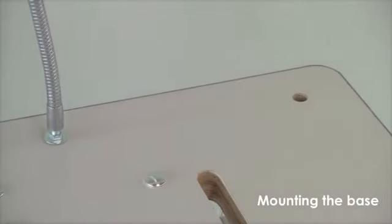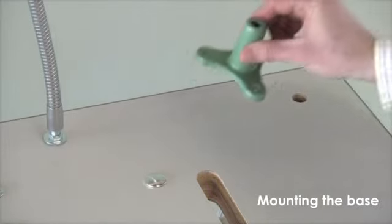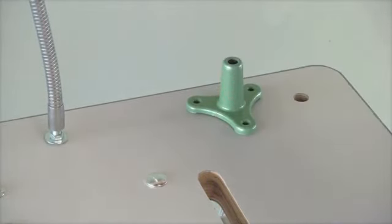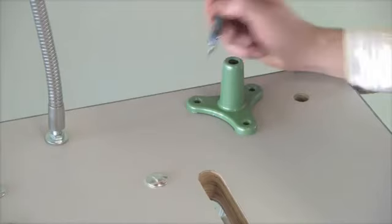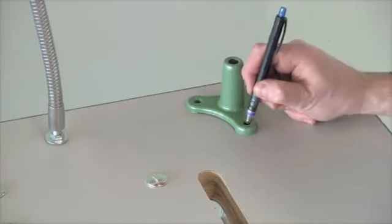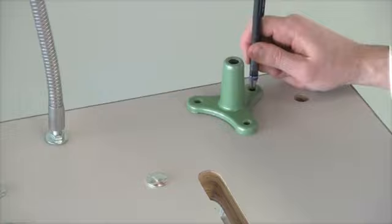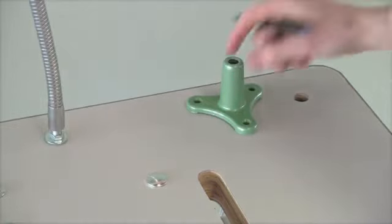To begin, determine the location of the threadstand base. The base should be placed behind the sewing machine, approximately 6 inches from the right edge of the sewing table and a half inch from the back. Mark the three screw holes of the threadstand base for drilling with a 3/16 inch drill bit.